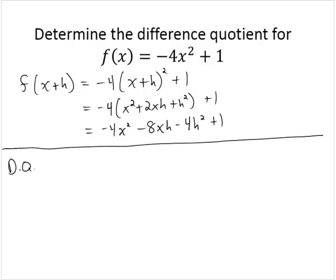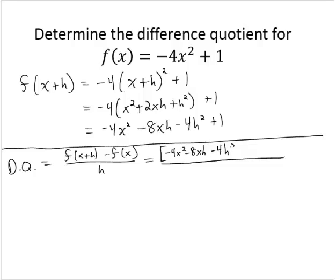The difference quotient — recall — is f(x+h) minus f(x) over h. Using brackets to separate the two expressions: [-4x² - 8xh - 4h² + 1] subtract [-4x² + 1], all over h. If you've done this correctly, there should be like terms that add to zero: -4x² minus -4x² goes to zero, and +1 minus +1 goes to zero.